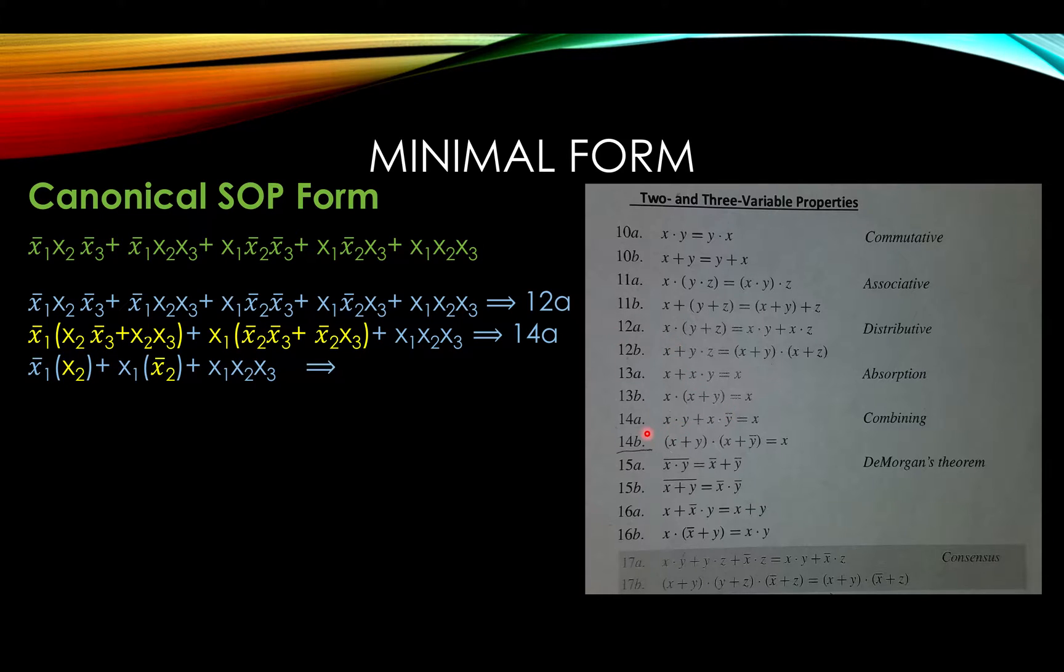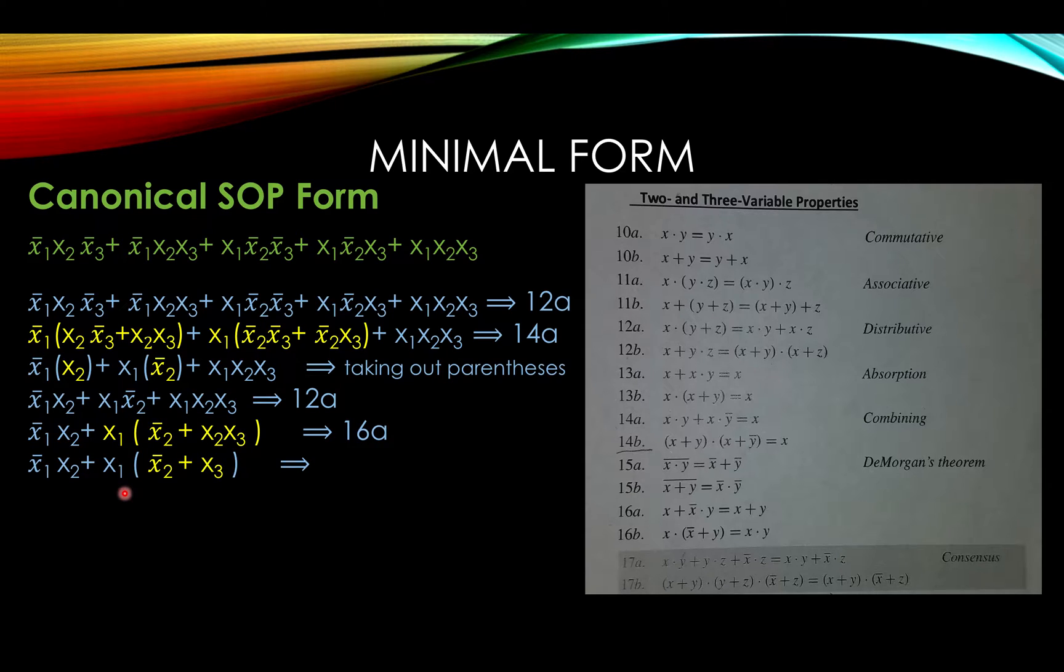And then we use 14a, combining, a combining property, as we have here. Then we took out the parentheses to make it easier to see our next property that we would be using, which is 12a, distributive property once again, we're taking out a variable from these two terms. Then we will be using 16a, which is another combining property, as shown here.